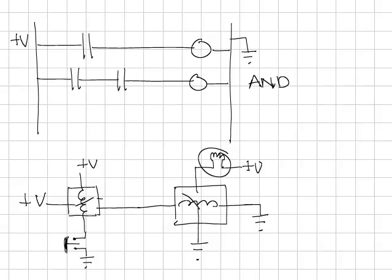If you do them in parallel, if this sensor is on or if this sensor is on, then the output is on. And that gives you an OR.